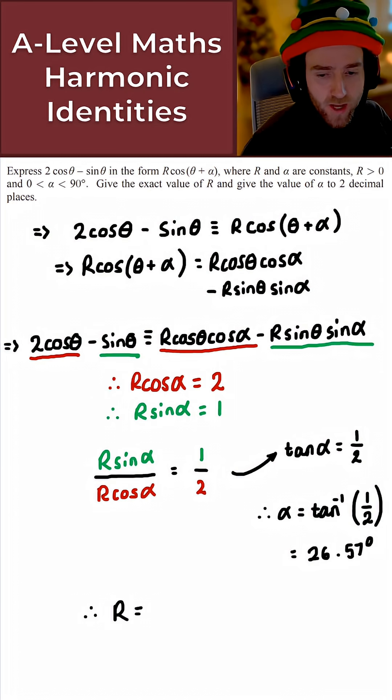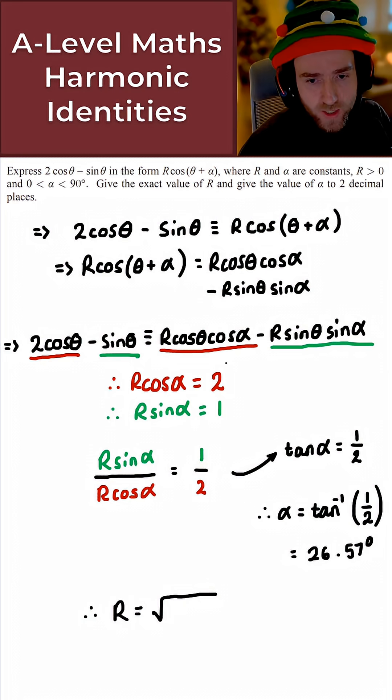And then finally, for the value of R here, this is just a straightforward application of Pythagoras. So this is just the square root then of 2 squared plus minus 1 squared, which is just the same as 1 squared. But anyway, just to be precise here. That is 4, that's 1, that's root 5 there.